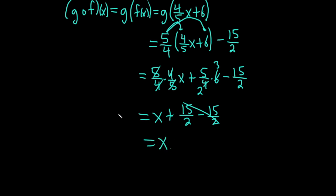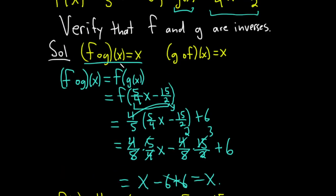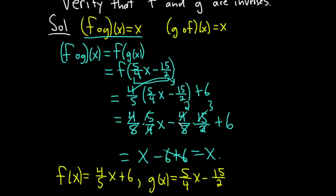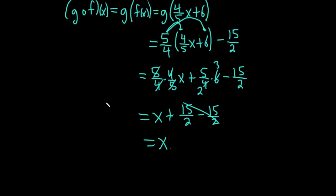So we've checked that both work. We computed both things that we needed to show. We need to show that f∘g of x is equal to x and g∘f of x is equal to x. So therefore we have verified that these functions are inverses. Not really a hard problem. Just takes a little bit of time to do. I hope this video has been helpful. Good luck.